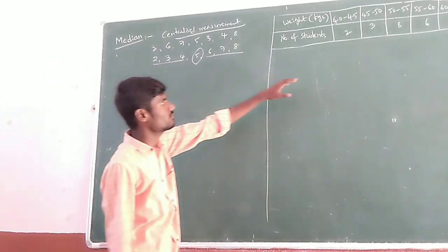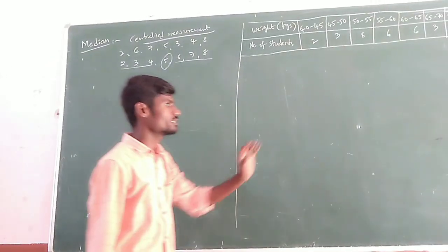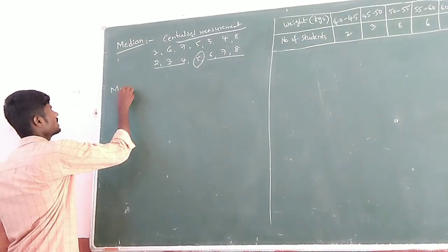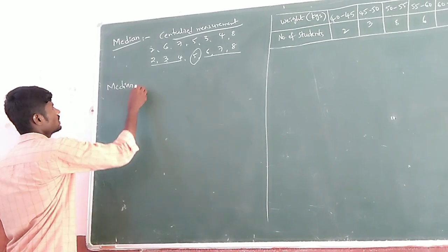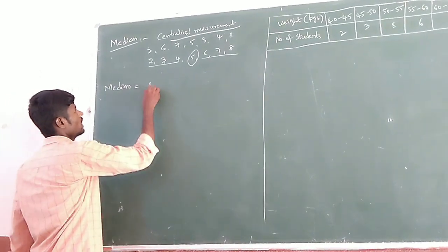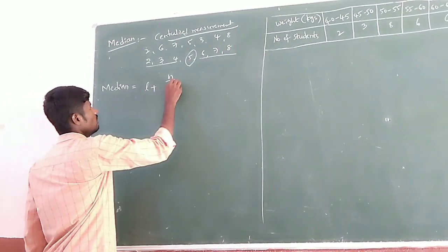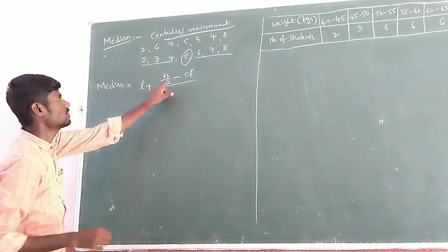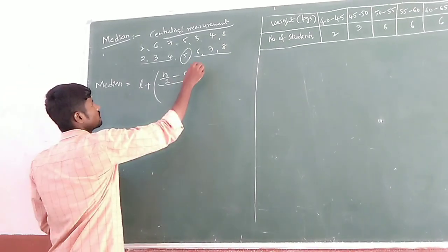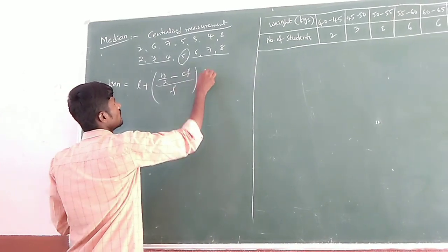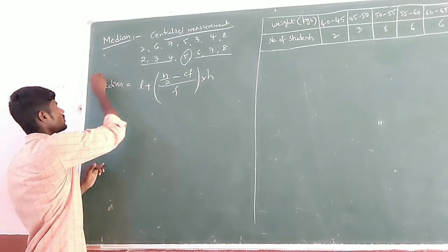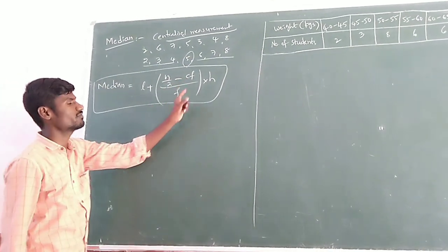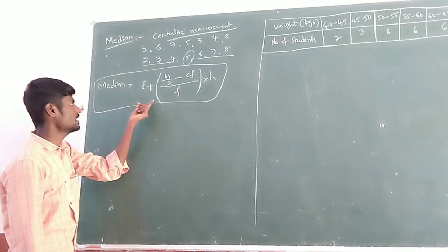Now, how can we calculate median for grouped data? Let us see by which formula we can calculate. The median formula is: Median = L + (N/2 − Cf) / F × H. So median equals L plus N by 2 minus Cf, divided by F, into H.